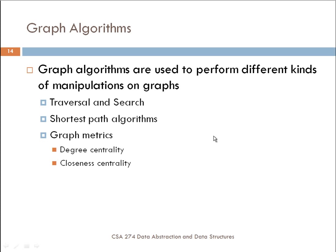In later episodes, so in this episode, we'll look specifically at traversal and search. Next episode, we'll look at shortest path algorithms, then we'll look at graph metrics, and then later we'll look at this thing called a spanning tree or a minimum spanning tree, which gives us other information about a graph.